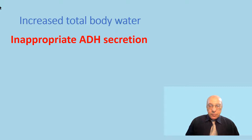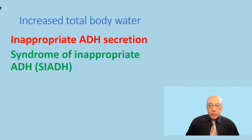The next group is what we call inappropriate anti-diuretic hormone secretion, in which there is no normal stimulus because the circulating blood volume is normal. But due to other causes — including some chest infections, meningitis, and some malignancies like bronchogenic carcinoma — there is direct stimulation of anti-diuretic hormone secretion, resulting in increase in total body water and hyponatremia. All these causes are grouped under the name Syndrome of Inappropriate Anti-Diuretic Hormone secretion, abbreviated as SIADH.